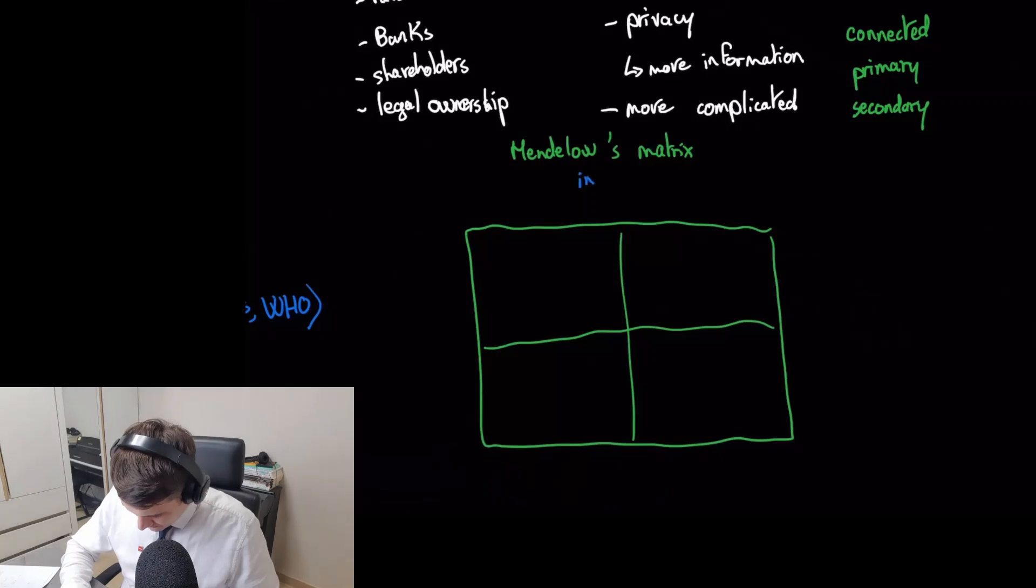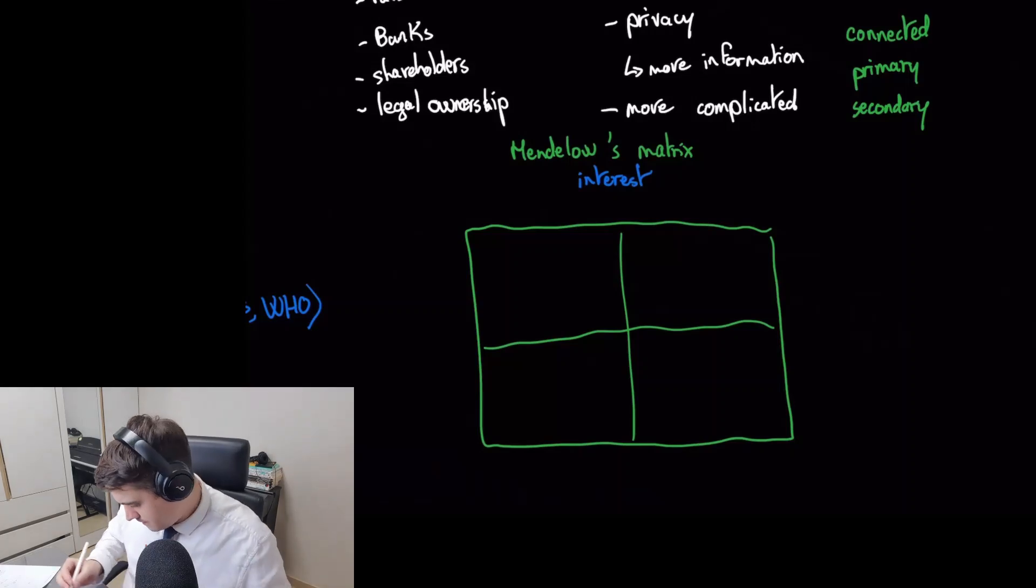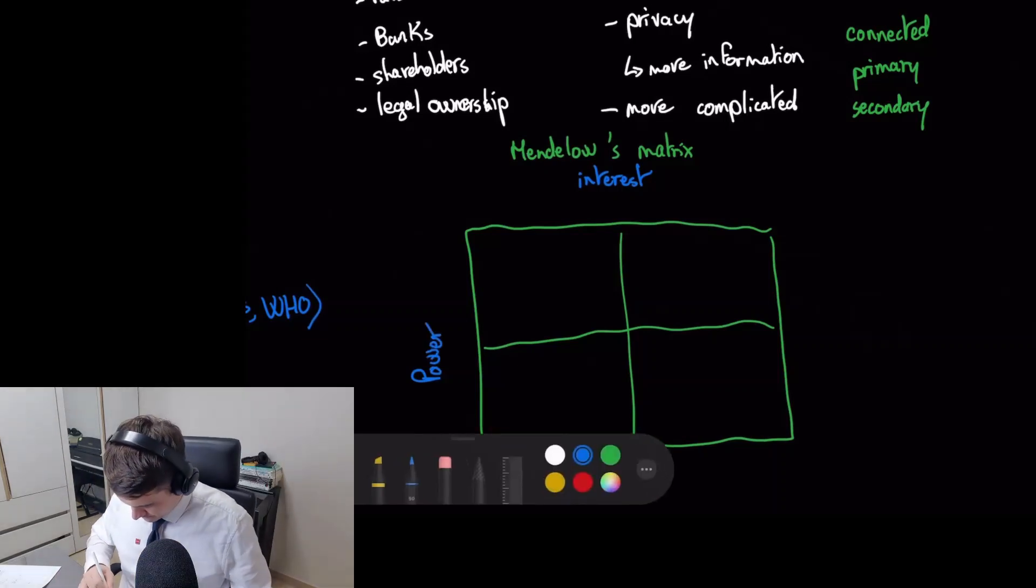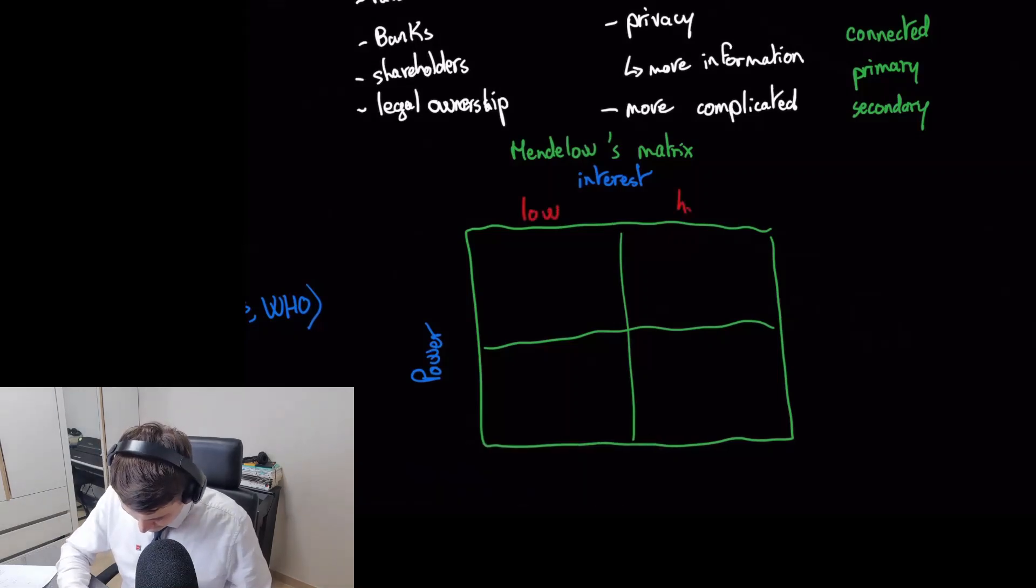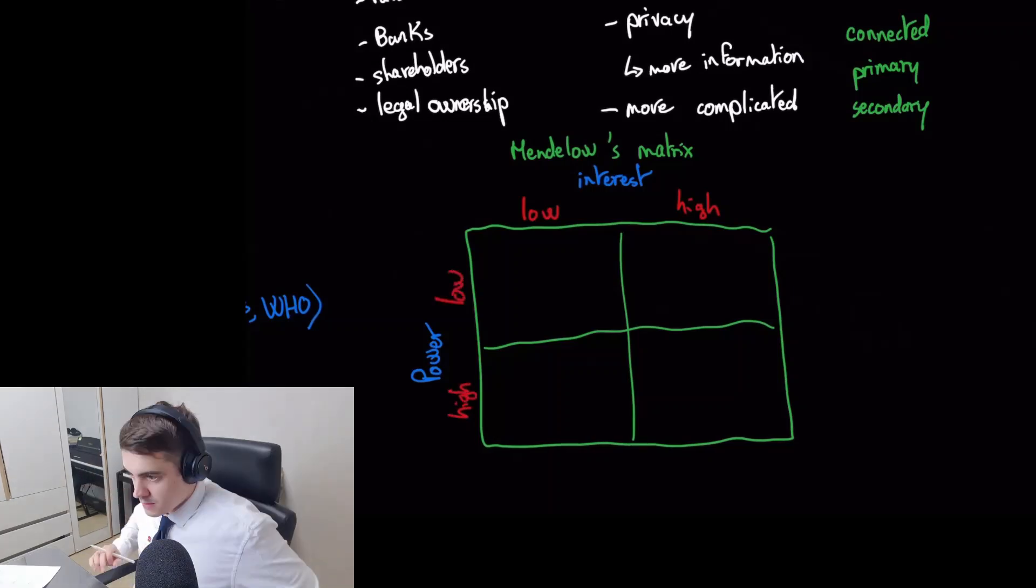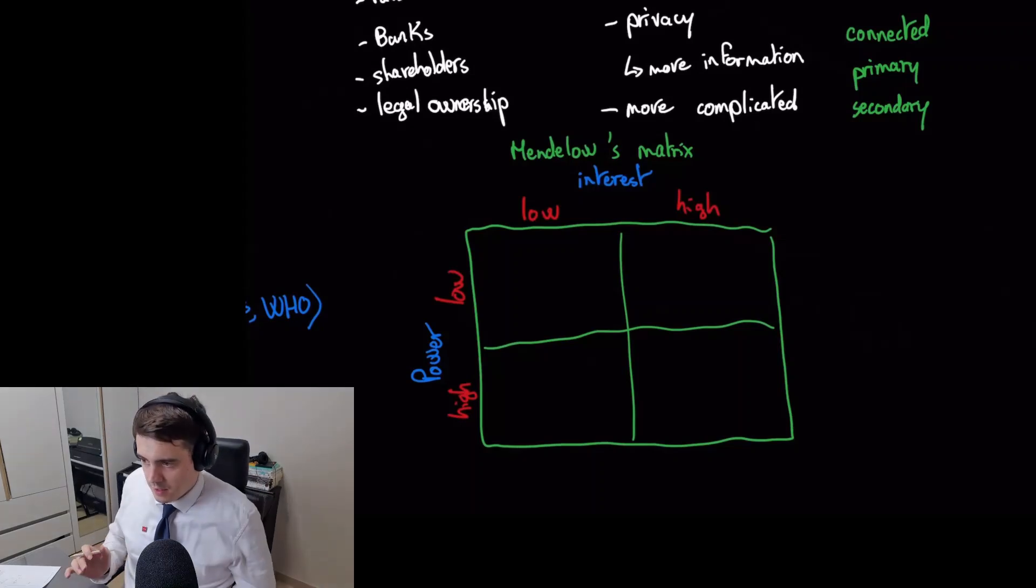We have interest and then power. So the way it works is like this: you have the level of interest at the top—how much is that stakeholder interested in the company—and then on the left you have how much power does that person have over the company.